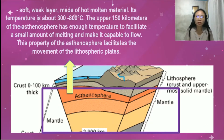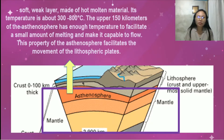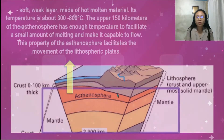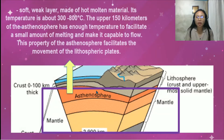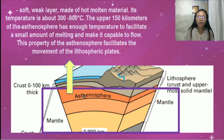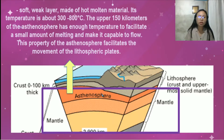Recalling the collision of oceanic crust and continental crust, the oceanic crust tends to subduct or move beneath the continental crust. The leading plate of the oceanic crust, which is subducting, goes down into the mantle. Because it is going down to the mantle where temperature is higher, that oceanic crust tends to melt. This property of the asthenosphere facilitates the movement of the lithospheric plate. Because of the high temperature in the mantle, the subducting rocks tend to melt, and that melting process facilitates the movement of lithospheric plates as they turn into magma.